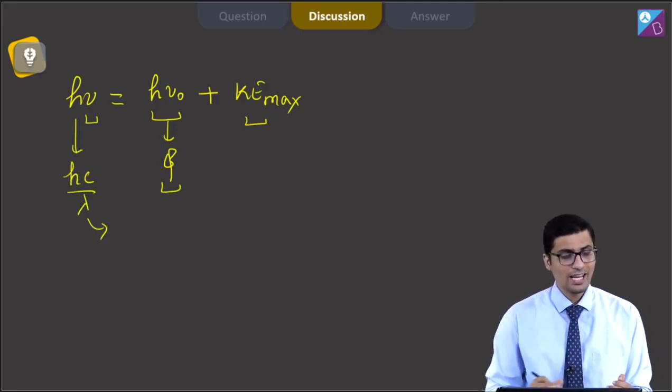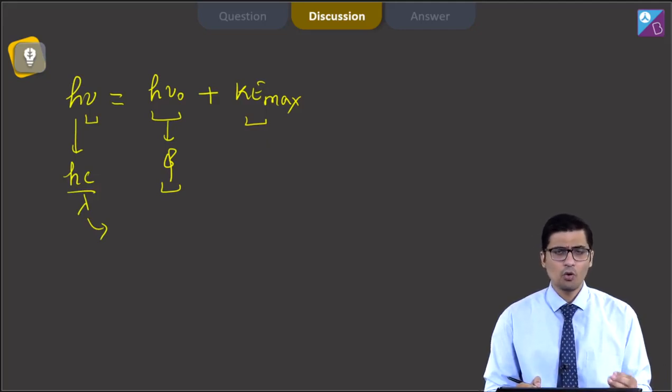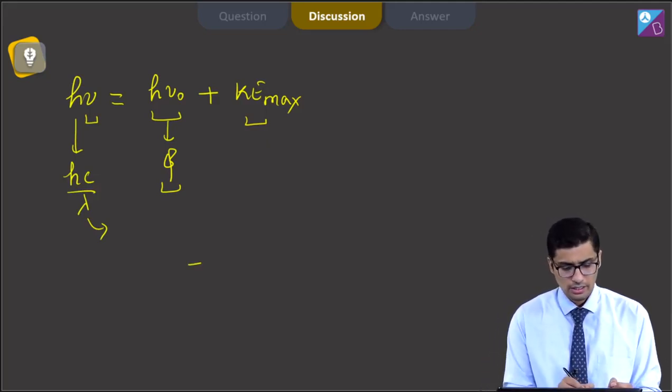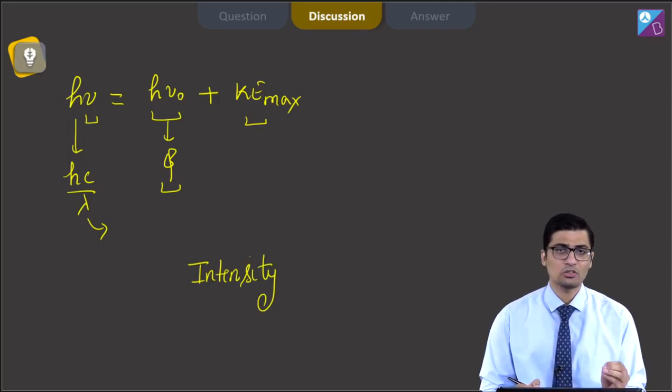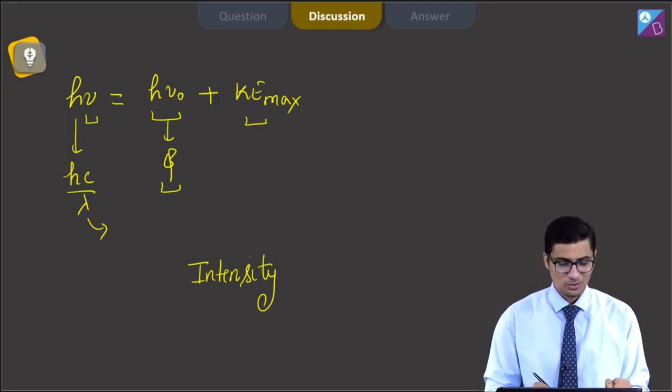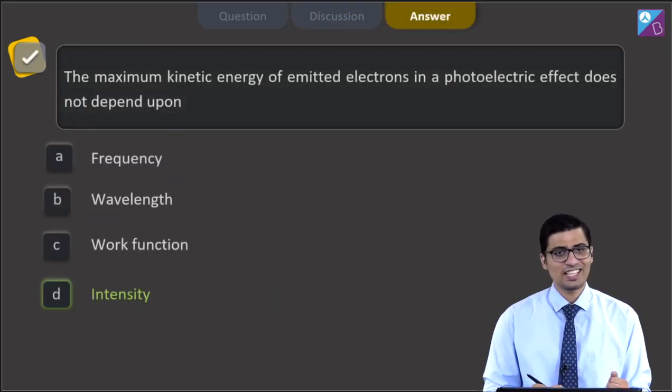Thus, it also depends on the incident wavelength. The only factor on which the kinetic energy's maximum value does not depend is the intensity. Please note that it is the saturation photo current that depends on the intensity. And hence for this question, the correct answer is D that is intensity.